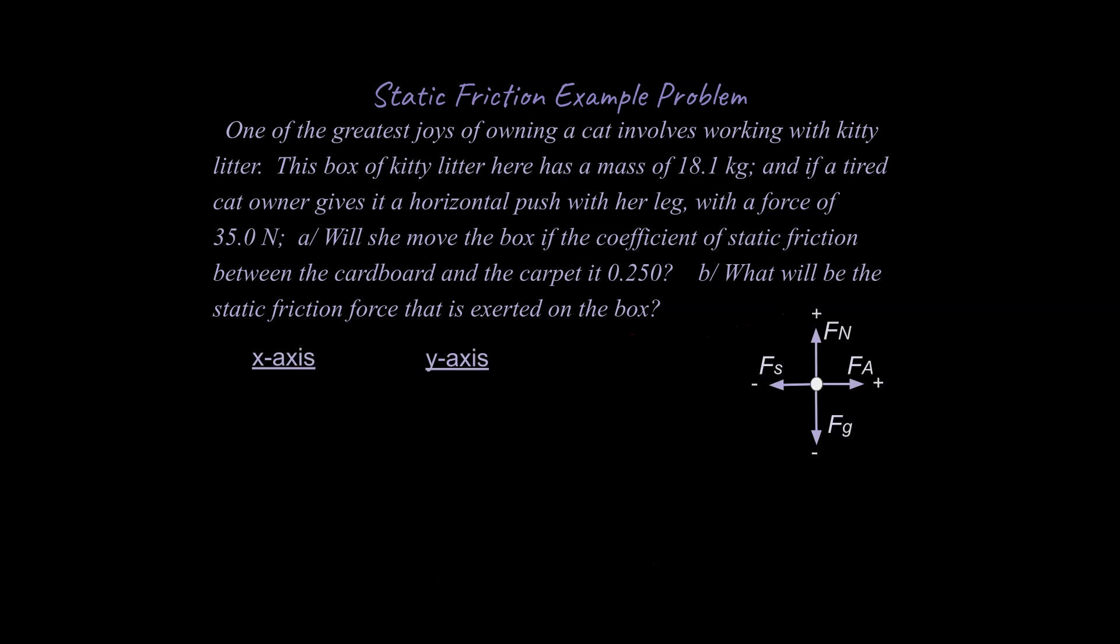At this point I want to say if you have no idea how to proceed or what's going on, you might want to watch that screencast that I've done on static friction. But one of the first strategies we're going to do is to separate out into the x-axis and y-axis and start translating the word problem information into more concise information in terms of variables. So one of the first things we know is that the mass is 18.1 kilograms, and that doesn't go in the x or the y, so we're going to put it kind of in a middle of the road column that we can make at the end.